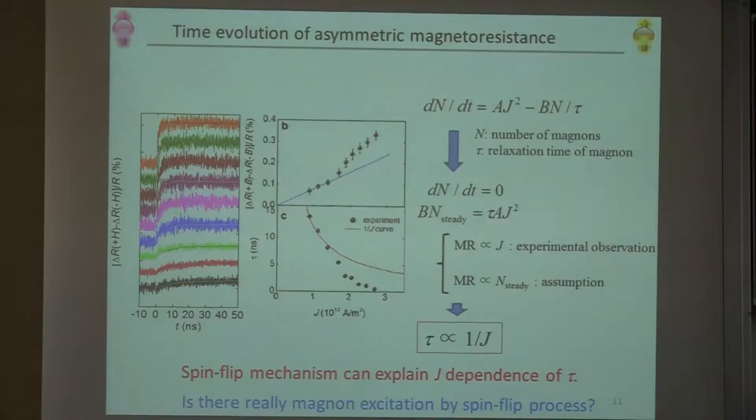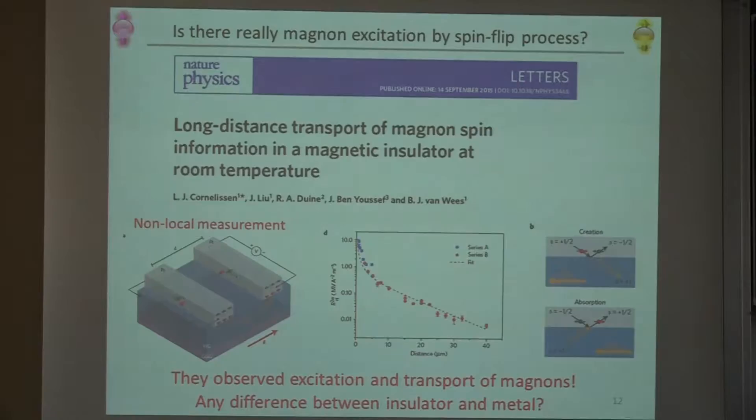So the equation is magnon excitation by spin-flip process. As already shown by the previous speakers, there are beautiful experiments by using insulating ferromagnet and platinum. As you saw in the talks of previous speakers, they can create magnons by using spin-flip scattering by this injected spin from the platinum into YIG. And this created magnon can propagate to the detector, and they get this kind of non-local result. So we can say the same thing happens also in metallic ferromagnet and non-magnet. The difference is between insulator or metals.